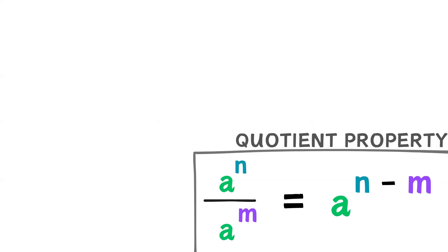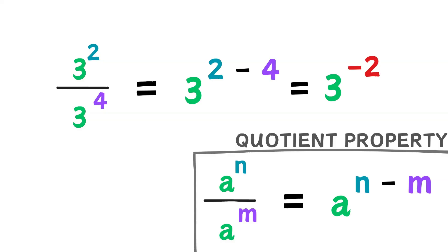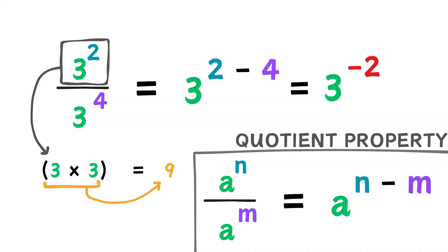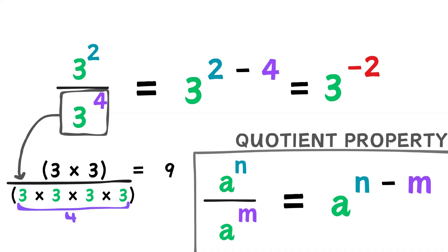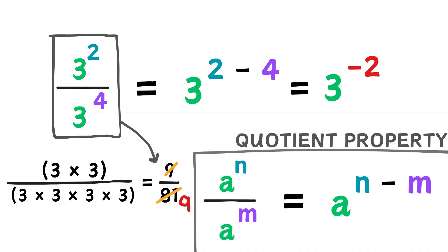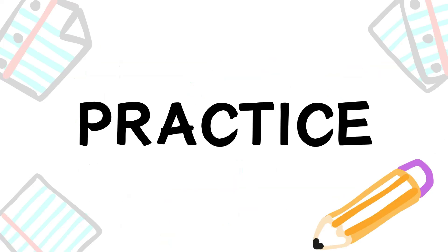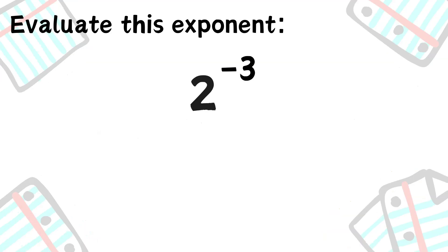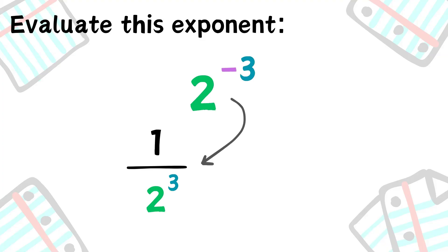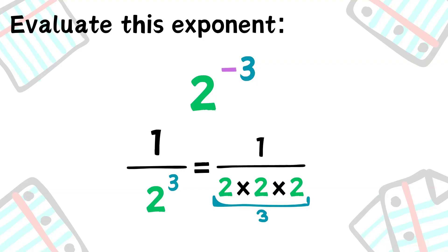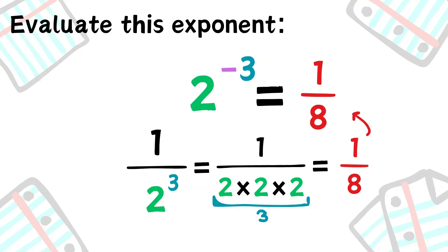Why does this work? Consider the quotient of powers property. If we have 3 to the power of 2 divided by 3 to the power of 4, we should get 3 to the power of negative 2. 3 to the power of 2 is 9, and 3 to the power of 4 is 81. 9 divided by 81 is 1 over 9, which we can also write as 1 over 3 to the power of 2 — the reciprocal of 3 to the power of 2.